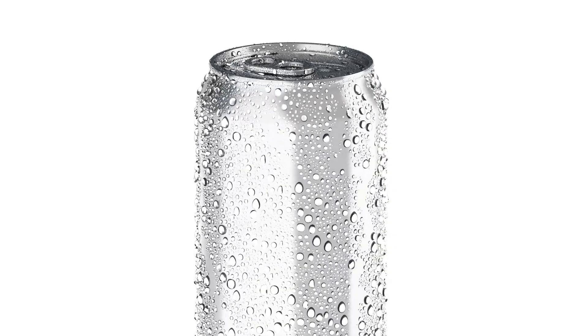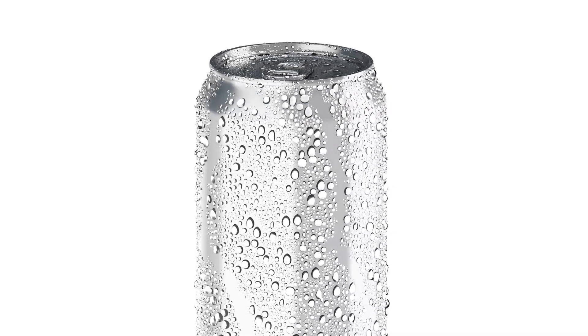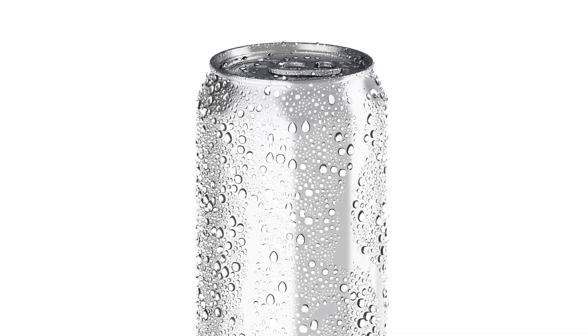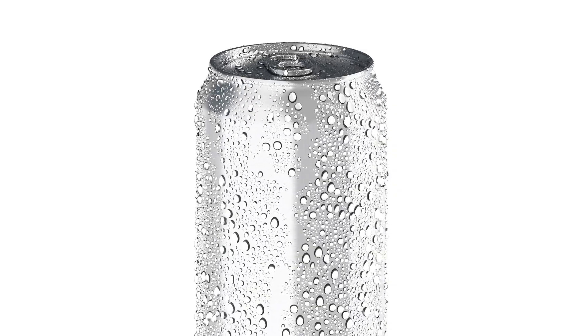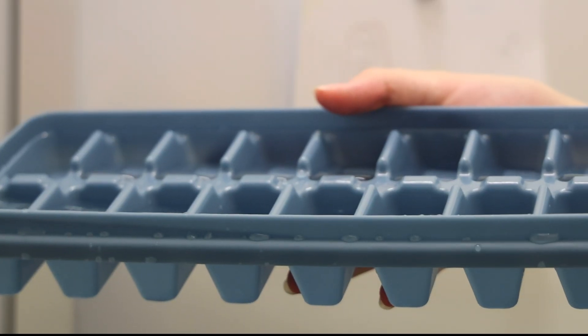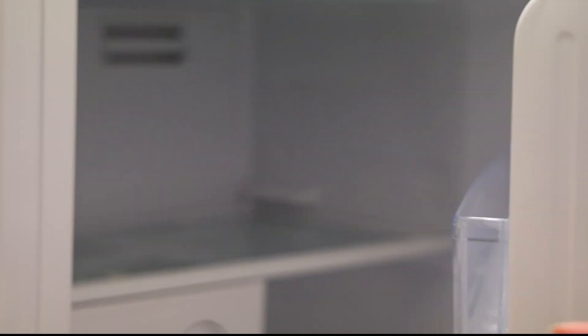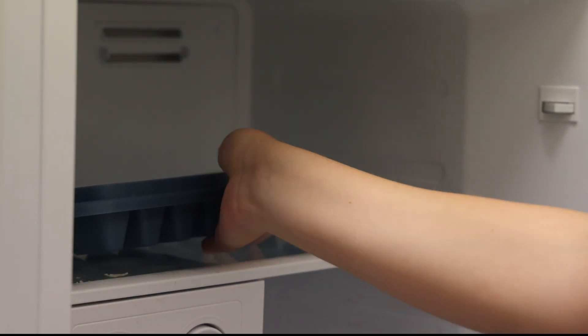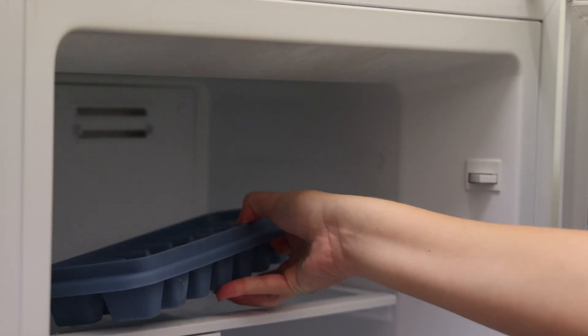Matter can also change when it is cooled. The water droplets you see on a cold aluminium can is caused when water vapour in the air around the can cools. And the water you place in a freezer changes into ice when it's cooled.